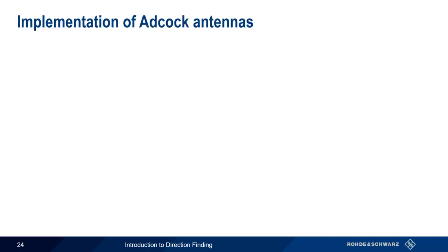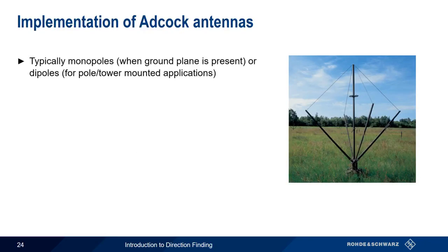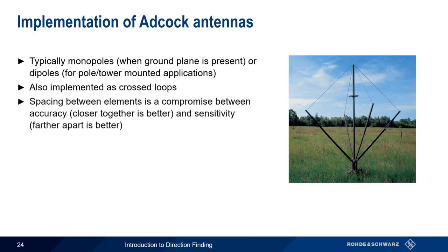The 180-degree ambiguity refers to the fact that a signal arriving from the west and one arriving from the east will create the same set of magnitudes on the east-west axis. But this is easily dealt with using a simple sense antenna that's usually placed at the center of the array. There are quite a few ways to physically implement ADCOCK antennas. Most typically, the individual antenna elements are implemented as monopoles, when we have a ground plane to work with, or as dipoles, when we have a pole-based or tower-mounted application. You can obtain the same type of pattern using a pair of crossed loops. The spacing of the elements is a compromise between accuracy and sensitivity — placing the elements closer together gives higher accuracy, but we get better sensitivity when the elements are spaced further apart.